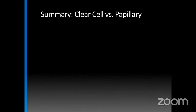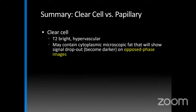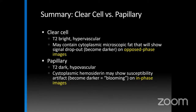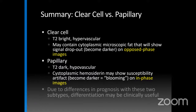To summarize clear cell versus papillary: clear cell is T2 bright and hypervascular, may show dropout on opposed-phase from microscopic cytoplasmic fat, is more common, and has worse prognosis. Papillary is T2 dark and hypovascular, with cytoplasmic hemosiderin causing susceptibility artifact and darker signal on in-phase. They are conveniently opposite each other. Differentiating the two is clinically important because prognosis differs so significantly — in a poor surgical candidate or a patient with one kidney, identifying a mass as probably papillary rather than clear cell may indicate less aggressive treatment.